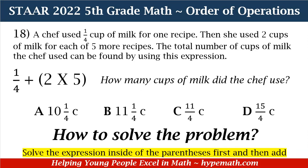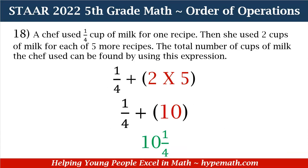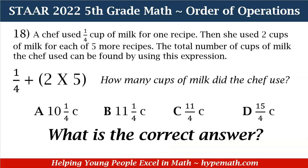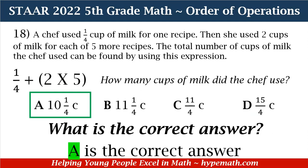So how do we solve this problem? First, we solve the expression inside the parentheses, and then we add. We multiply 2 times 5, which equals 10. Then we add 1/4 plus 10, which equals 10 and 1/4. Looking at our answer choices to see which one shows 10 and 1/4 cups of milk — if you said A is the correct answer, you're absolutely right. 1/4 + (2 × 5) is equal to 10 and 1/4 cups.